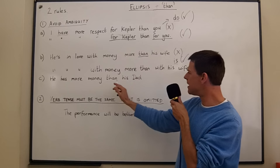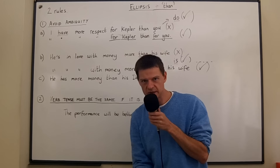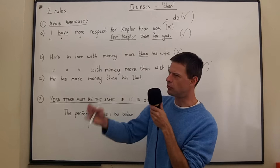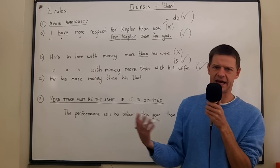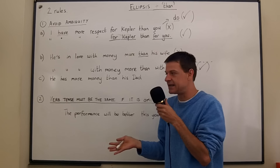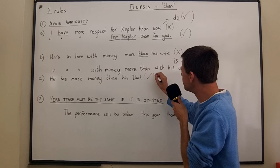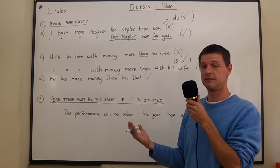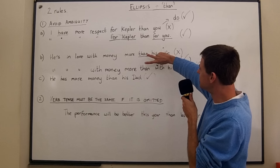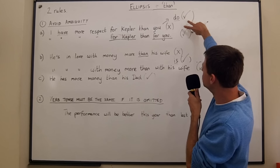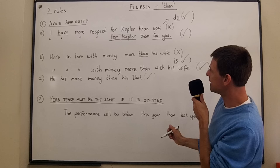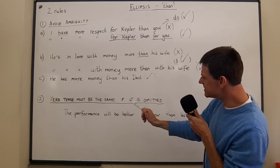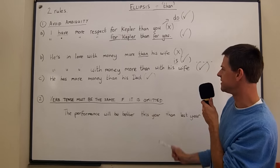That makes it really clear — it's balanced and there's no ambiguity. Now look at sentence C: 'He has more money than his dad.' There's no ambiguity here. You can't compare money and dads — they're completely different things. So this one is already correct because it's unambiguous. There's only one possible meaning. With the previous two there were two possible meanings, so you had to change them. That's the first rule: avoid ambiguity.